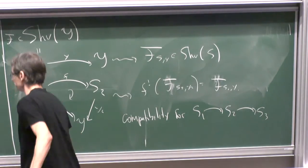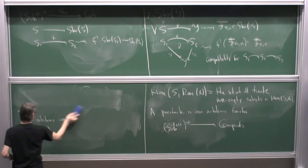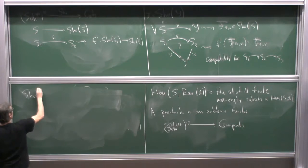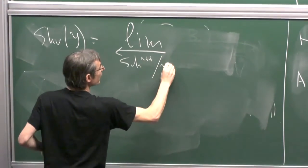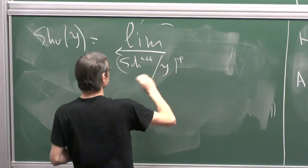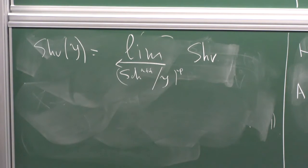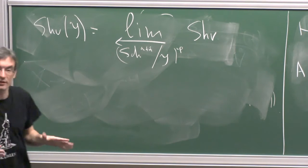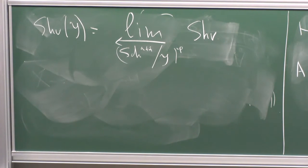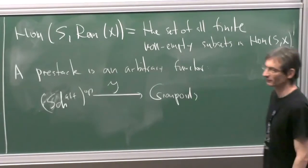For notation: if P_Y is the projection to the point, I'll write cohomology with compact supports instead of P_Y lower-shriek. The upper-shriek pullback of the constant sheaf from the point I'll denote by the dualizing sheaf ω_Y. Combining these: the cohomology with compact supports of the dualizing sheaf is what I'll call chains — written with a lower-star — because in the higher world we're not taking individual cohomology groups; it really is chains.